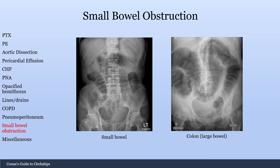Here is another picture showing how to identify small bowel versus large bowel. For small bowel, you'll have the plicae circularis, which go all the way across the bowel, and it should be 3 centimeters. On the other hand, for the large bowel, it's a little bit wider — remember it can go up to 6 centimeters — and here you have haustra, the haustral folds, which do not go all the way across the width of the bowel.